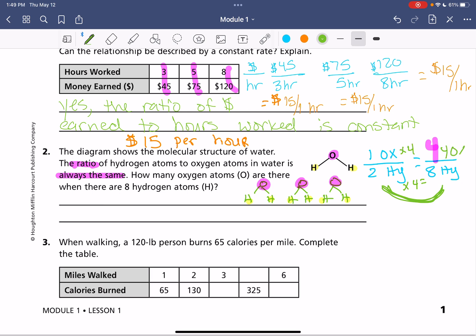That would get us our 4 oxygen atoms. So there are 4 oxygen atoms, 4 oxygen atoms for every 8 hydrogen atoms.